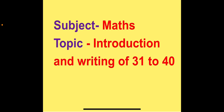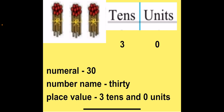Our subject today is Maths and our topic today is Introduction and Writing of Numbers 31 to 40. Children, we have already learnt till number 30. In 30 we have 3 tenths and 0 units, and the number name for 30 is THIRTY. The place value for 30 is 3 tenths and 0 units.